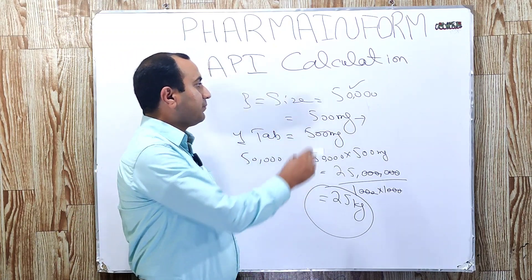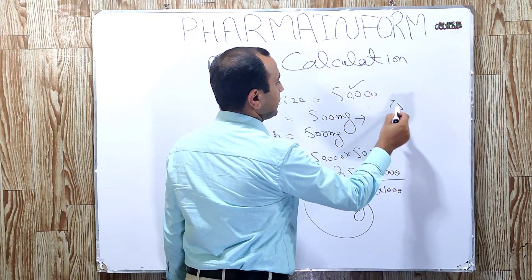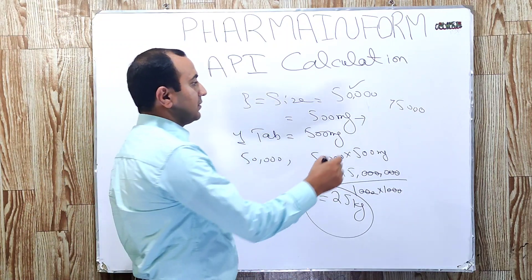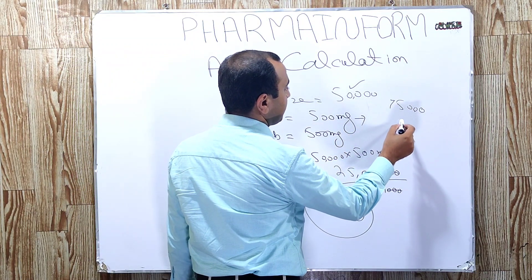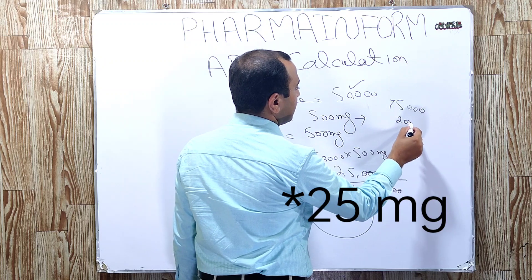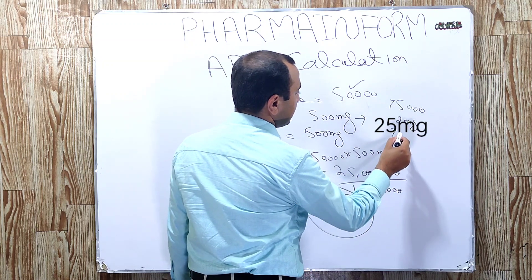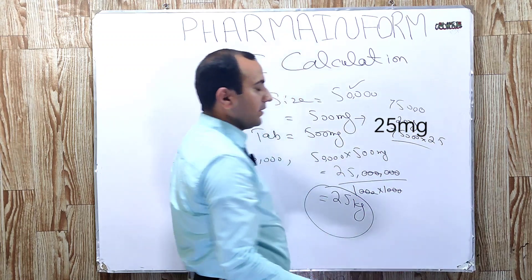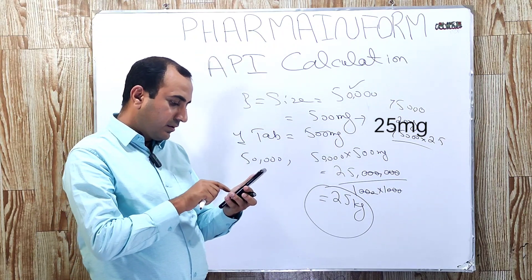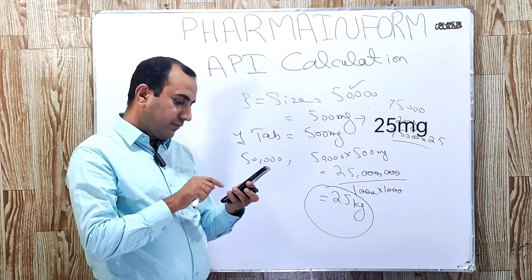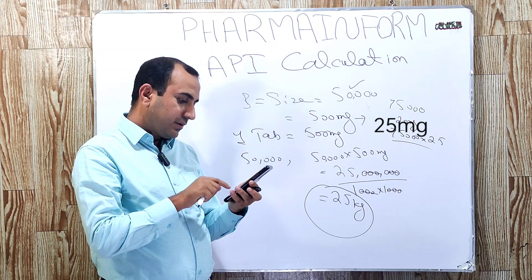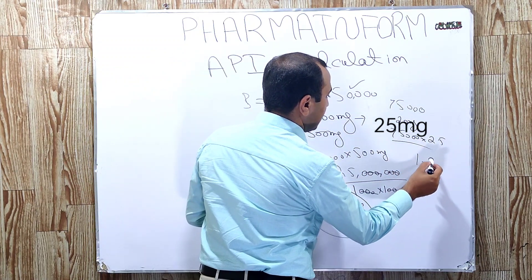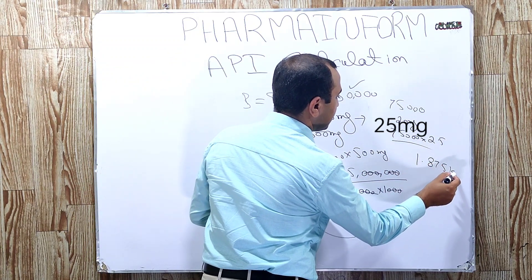Now if we want to prepare 75,000 tablets and the strength of API is 20 mg, the answer is simply 75,000 × 20 mg. When we calculate and convert it into kilograms, the answer will be 1.875 kg.